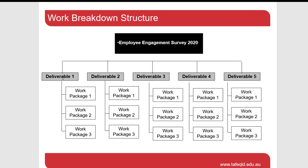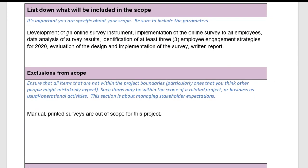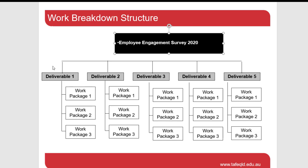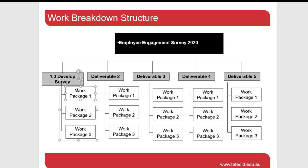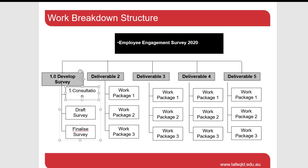Now we need to decide what our main deliverables will be, and we can organise these in a couple of different ways. Looking back at the scope of work, we've got develop the survey, implement it, and data analysis. I'll place develop survey as 1.0. Under that you can imagine there'll be different work packages, such as 1.1 — consult with the organisation, 1.2 — build a draft survey, and 1.3 — finalise the survey.